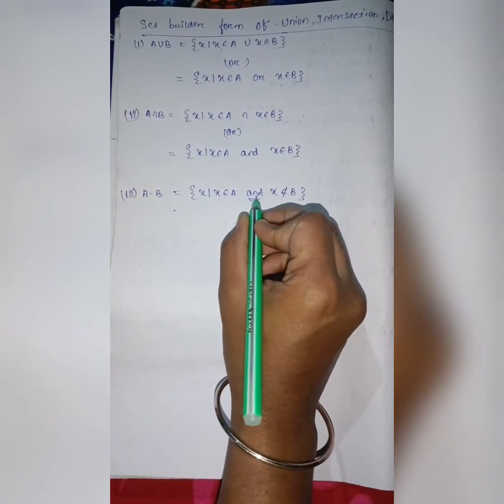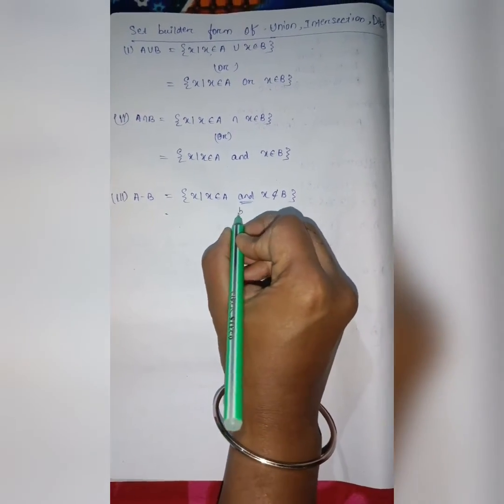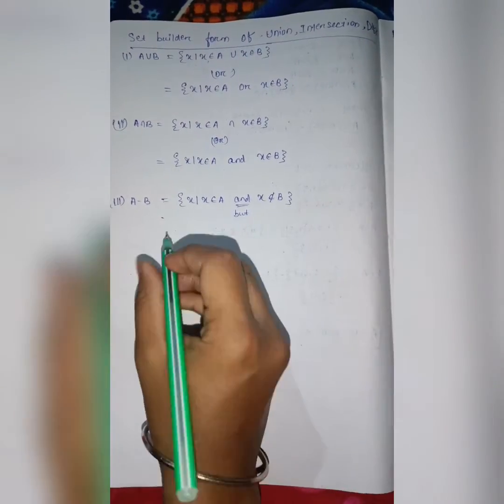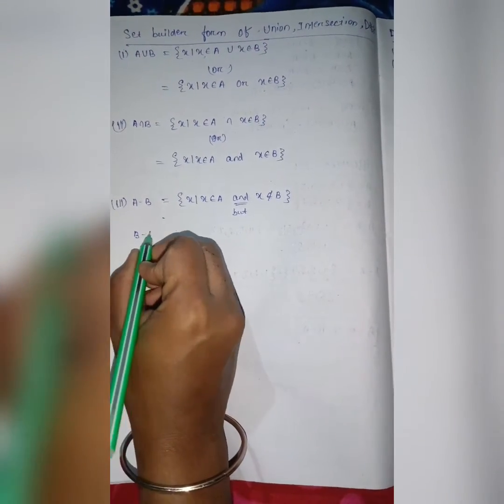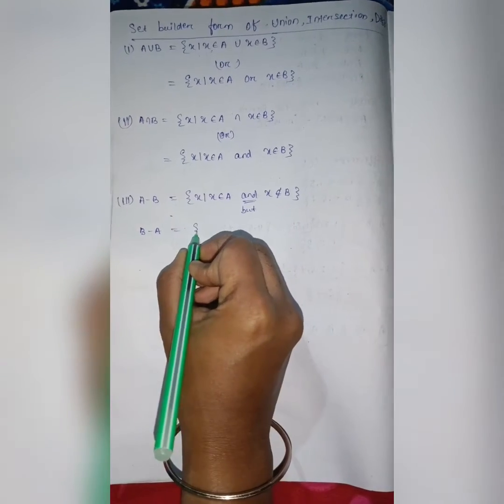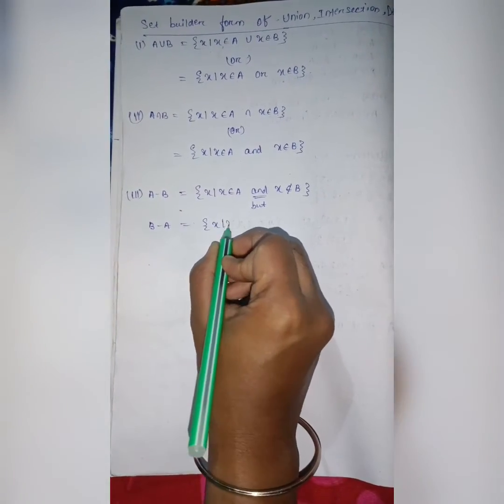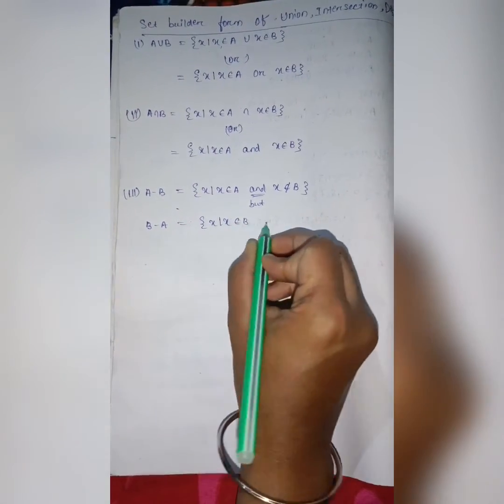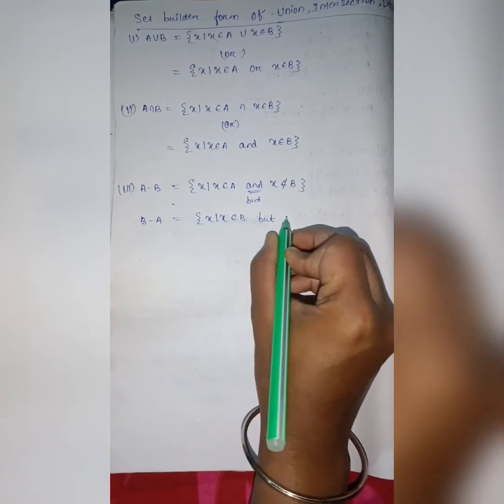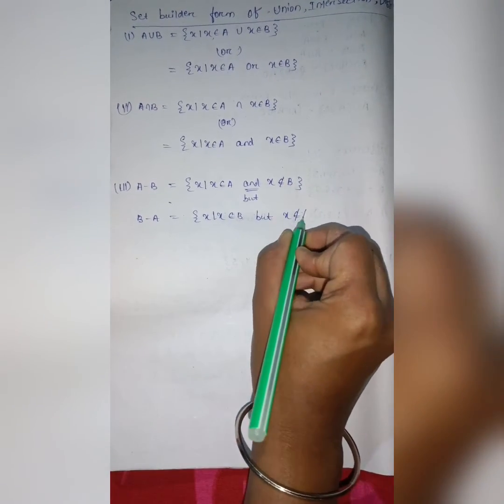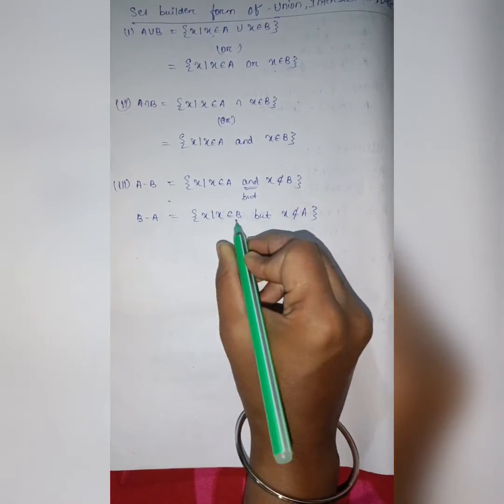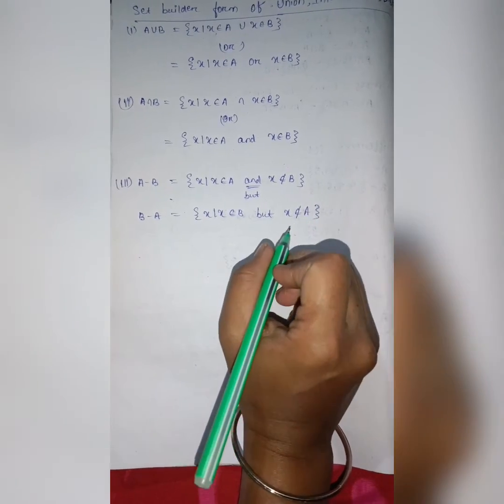Here the word we use and or but. If I write B difference A, it means in set build up form it is x source that x belongs to B but x does not belong to A. The element present in B is not present in A.